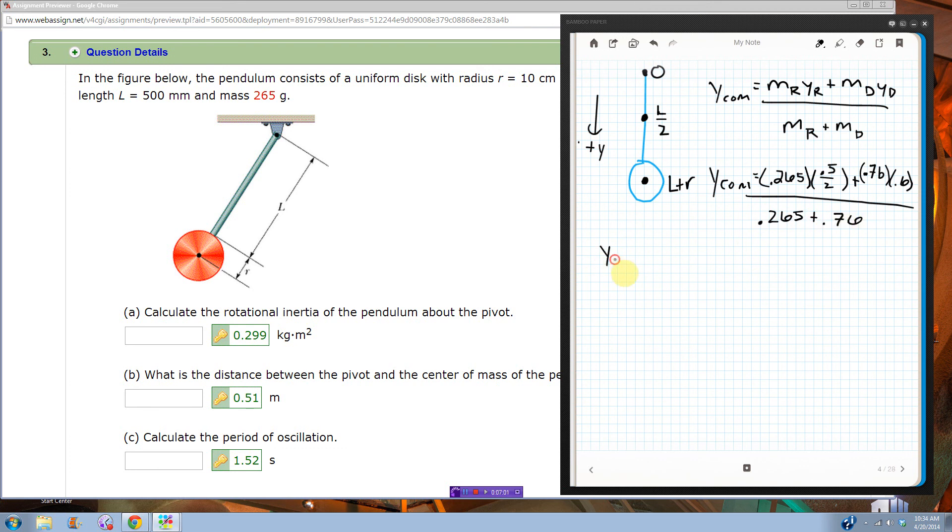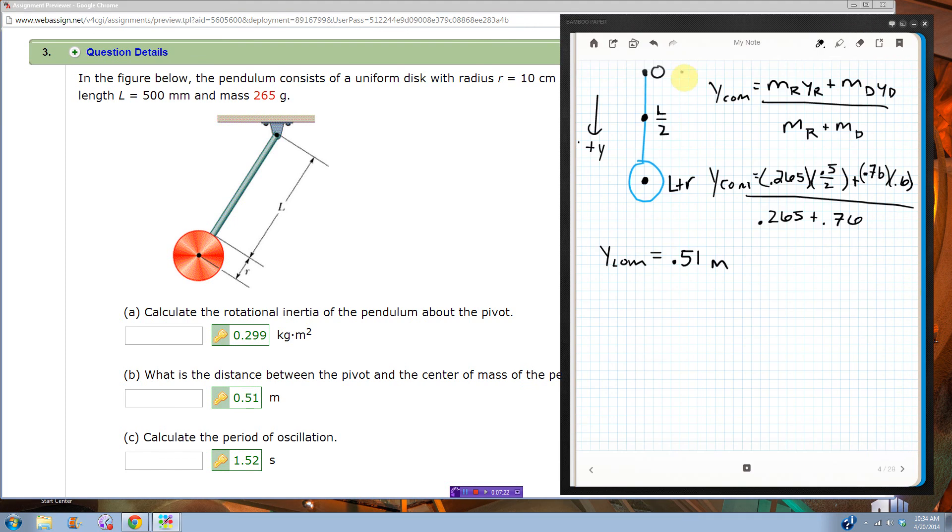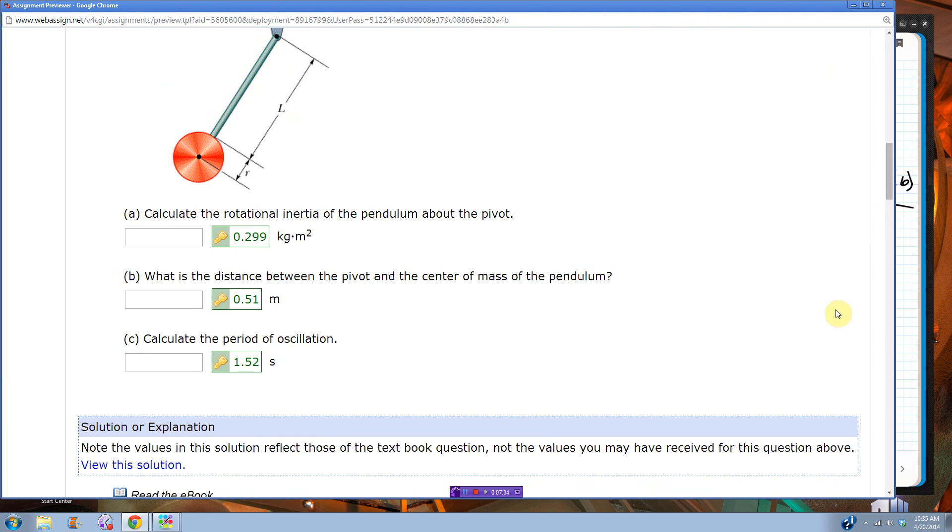Okay, put that all in my calculator, and I get that the Y coordinate of the center of mass of this whole pendulum is 0.5095, blah, blah, blah, blah, blah. If I round that, I get 0.51 meters. Now they want, what is the distance between the pivot and the center of mass of the pendulum, but I said the pivot was at 0. So if the center of mass is at 0.51, then that is the distance between the center of mass and the pivot. So that's good, it matches.